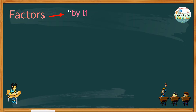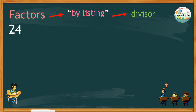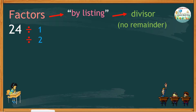Another way to find the factors of a number is by listing. Let's say you need to find the factors of 24. Listing means you simply list down the divisors — exact numbers that you can use to divide 24 with no remainder. Let's start with 1: 24 divided by 1 equals 24 with no remainder. 24 can also be divided by 2, by 3, and by 4 with no remainder.